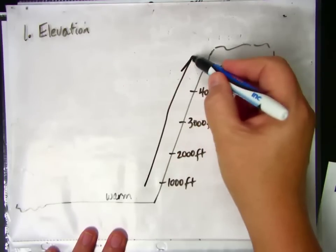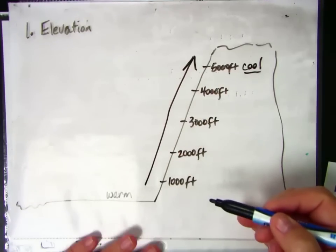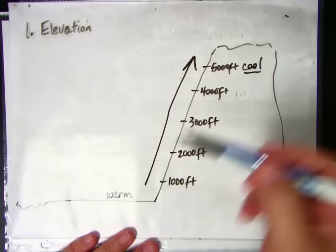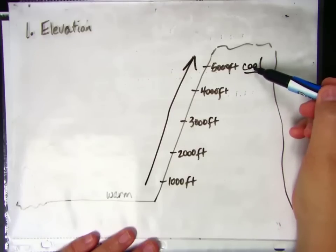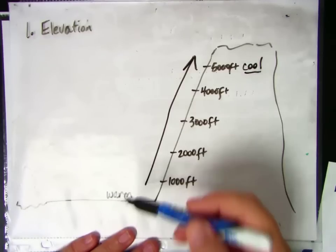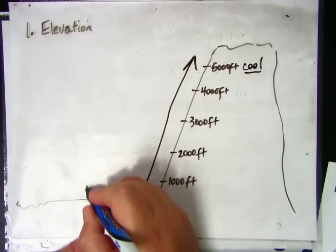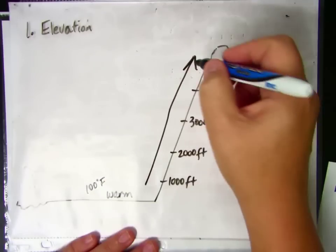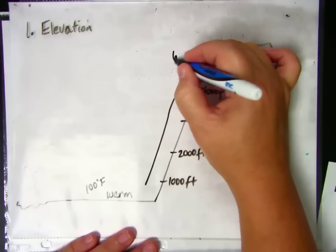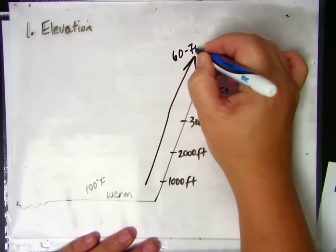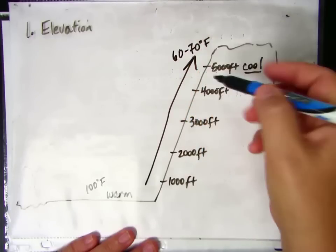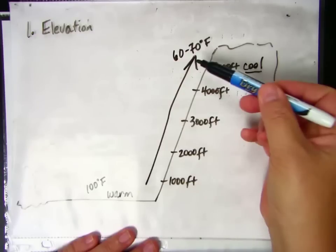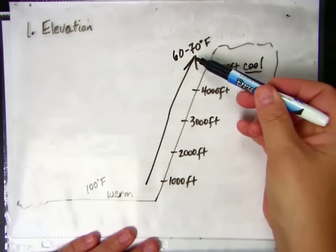So the higher up you go, the cooler it gets. Don't forget that in the summer months, this would be a cooler place than here. So let's say if it were 100 degrees Fahrenheit down here, it would probably be between 60 and 70 degrees Fahrenheit up here. So a 30 to 40 degree change in the temperature.